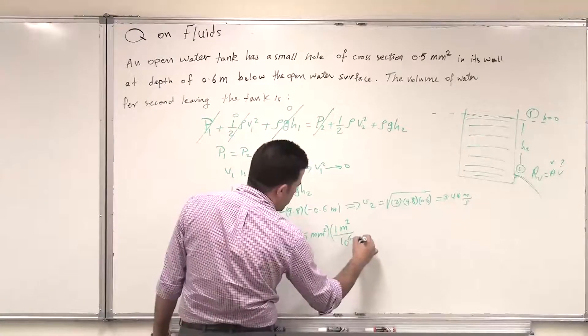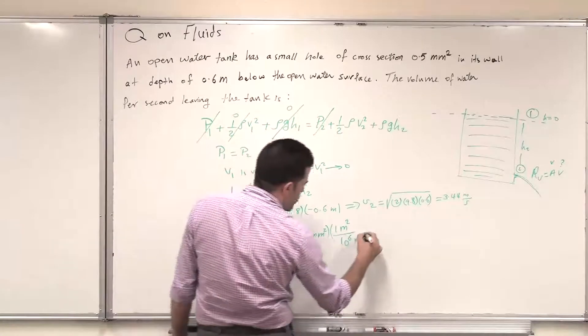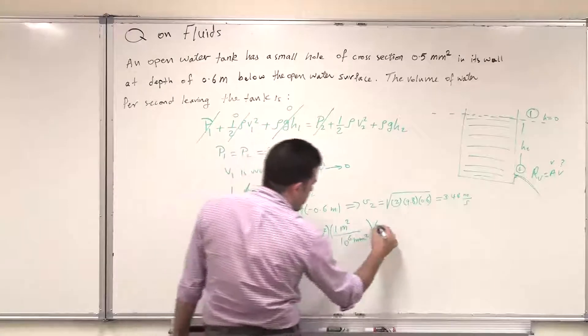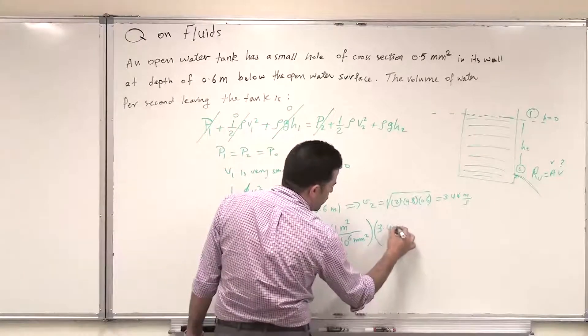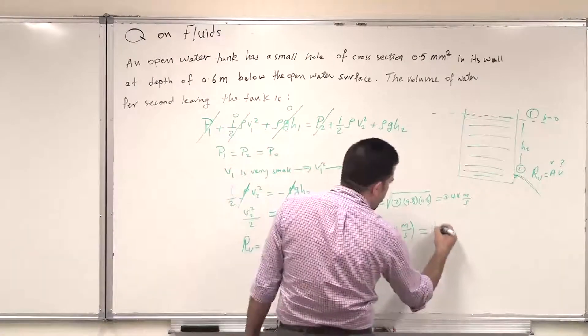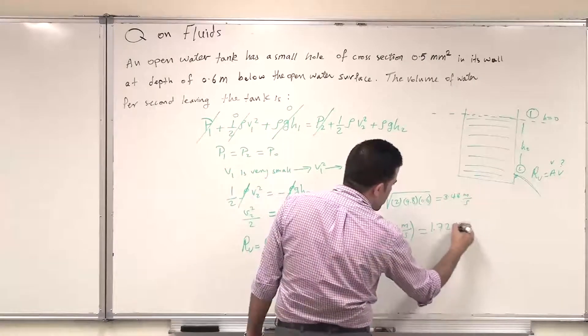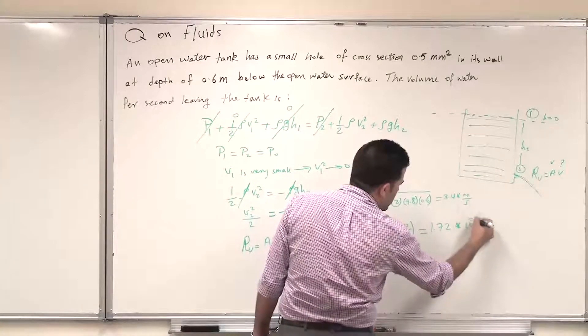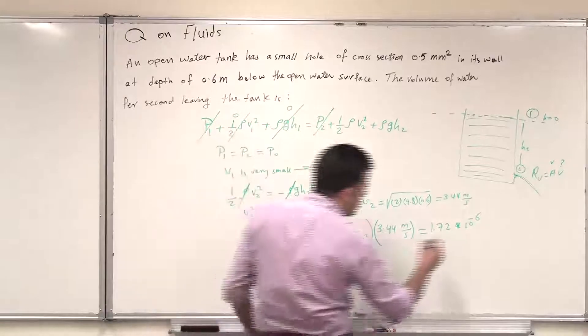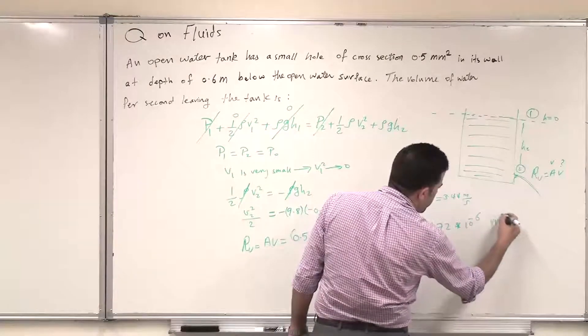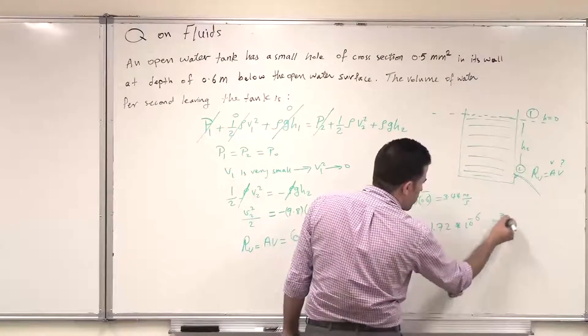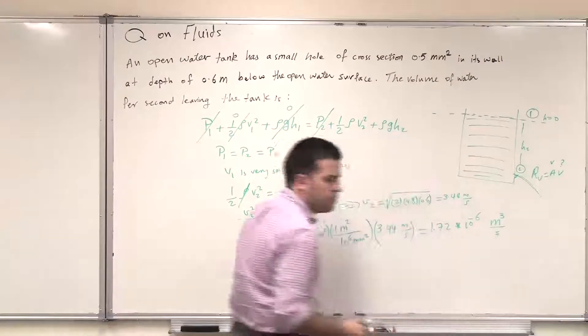And then I multiply it by the velocity that I just obtained which is 3.44 meters per second. And this will yield 1.72 times 10 to the power minus 6 and the unit should be of area multiplied by velocity which means meter cubed divided by second which is a volume flow rate, volume per time. Thank you.